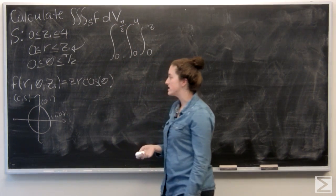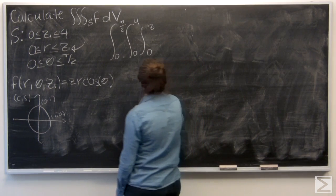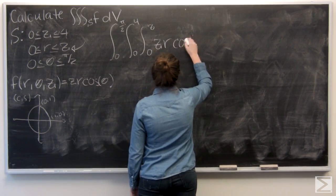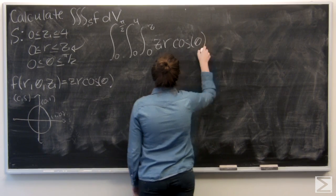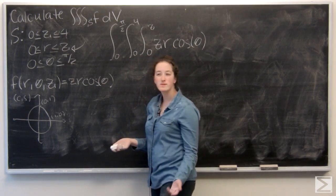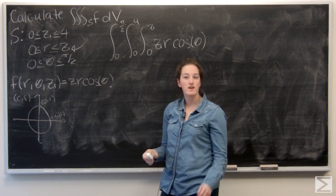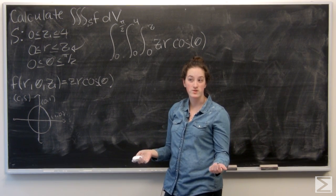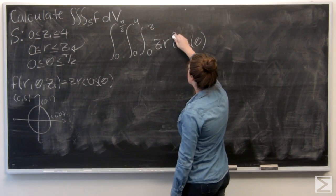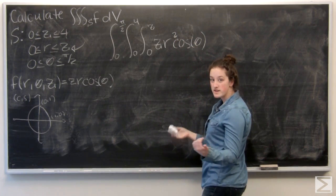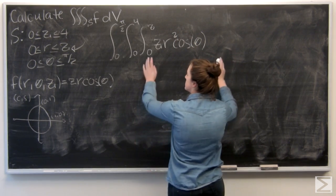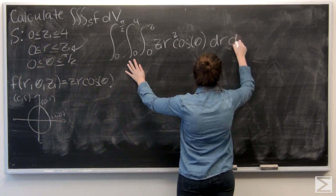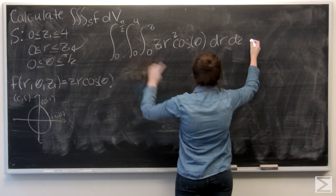Let me go ahead and write my function in. I've got z times r times cosine theta. Now, dV is a little bit different in cylindrical coordinates. It's not just dr dz d-theta. We've got an r in there too, so I'm going to make this r squared. It takes care of that. And let's go ahead and put our order in: dr, dz, d-theta.